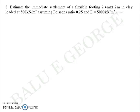Next question, quite similar. You are asked to estimate the immediate settlement of a flexible footing, rectangular in plan, 2.4 by 1.2 meters in clay, loaded at 300 kN per meter square. Poisson's ratio can be taken as 0.25, Young's modulus is 5,000 kilopascals.